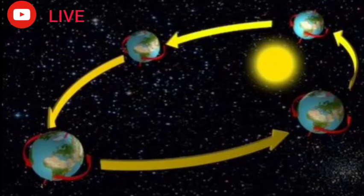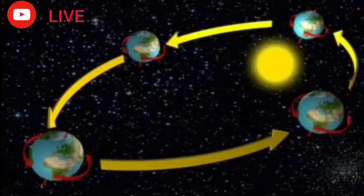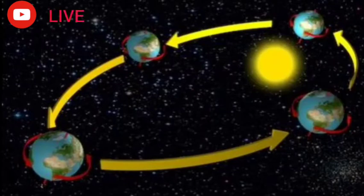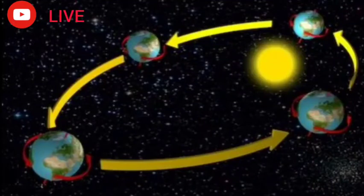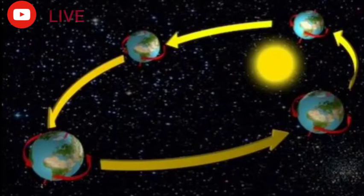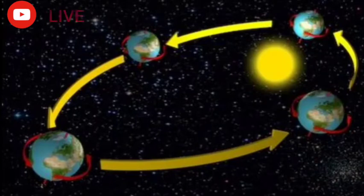This belt gets maximum heat energy from the sun. In your examination they will ask: which belt gets maximum heat energy from the sun? Your answer is the tropical belt. The rotation of the earth around the sun changes month by month — that is why the face of the earth receives different temperatures in different months. These temperatures extend between the Tropic of Cancer and the Tropic of Capricorn, and that is why this belt is called the tropical belt.